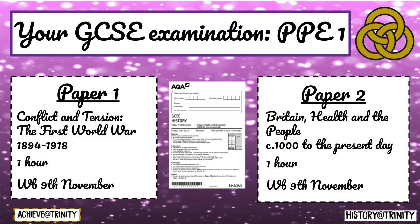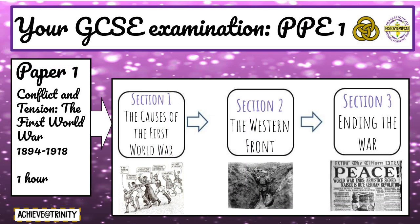The second paper to be sat is Paper 2, Britain Health and the People. This paper will also last one hour. The first exam paper will test students' knowledge and understanding of the Conflict and Tension unit of the First World War, and the paper will ask questions from across the full unit.